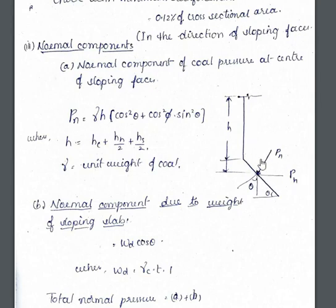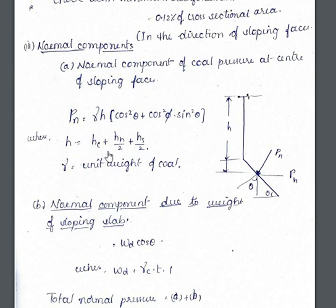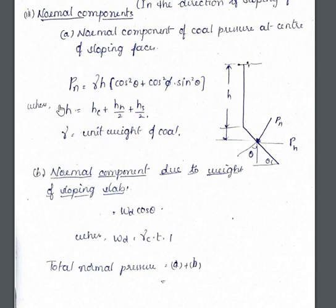For the hopper bottom, we find the normal component of pressure, P_n, which acts normal to the sloping slab. This accounts for both horizontal and vertical pressure as a resultant. The formula is: P_n = γH × (cos²θ + cos²φ × sin²θ), where H = Hc + H/2 + Hs/2, γ is the unit weight of the material, and φ is the angle of repose.